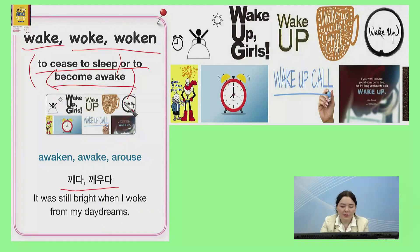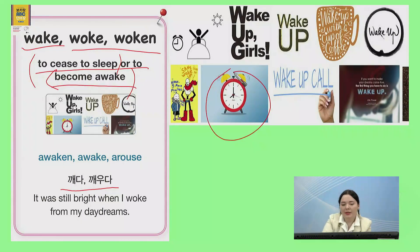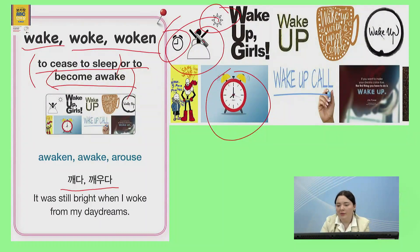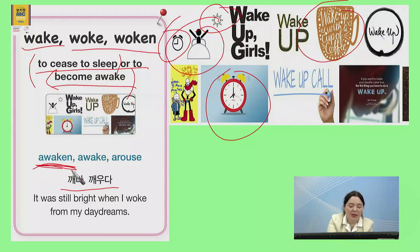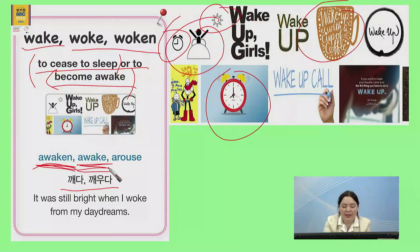So you might say, my alarm woke me up. The sun and my alarm woke me up. You might say, wake up with a cup of coffee. 커피 마시면서 깨우다. 깨우자. Awake이랑 비슷한 말은 awaken — 깨우다, awake — 깨우다, 깨우고 있다. Arouse — 깨우다.